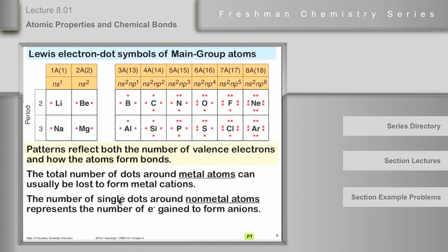And the number of single dots around non-metal atoms, you remember what that's like in the periodic table, where the non-metals are compared to the metals, it usually represents the formation of ionic compounds, the number of electrons that that atom gains to form an anion. And this is usually one, two, or three. The instances where there's more than three are very rare, and we probably won't encounter any in this course.